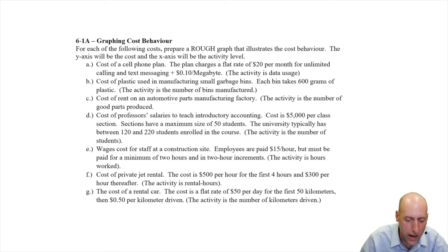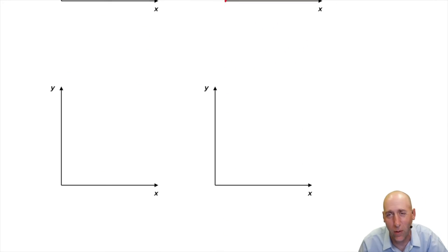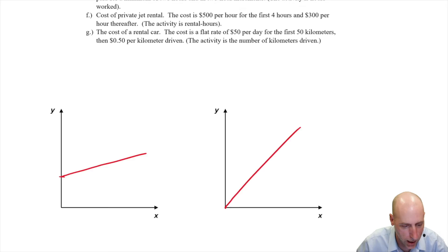C, cost of rent on an automotive parts manufacturing factory. The activity is the number of good parts produced. Well, my landlord doesn't know how many parts I'm making. They don't even care if I make zero parts. Let's say I take the month off. They're still going to charge me rent. So this is a fixed cost. If my rent is $10,000, it doesn't matter if I manufacture zero parts or a million parts. My rent is my rent. So this is a fixed cost and that's what a fixed cost looks like. A straight, horizontal line.